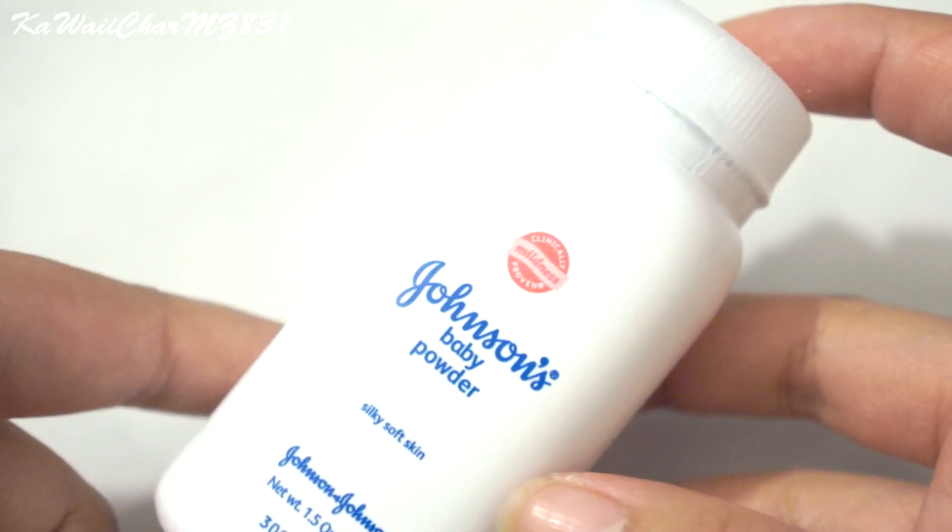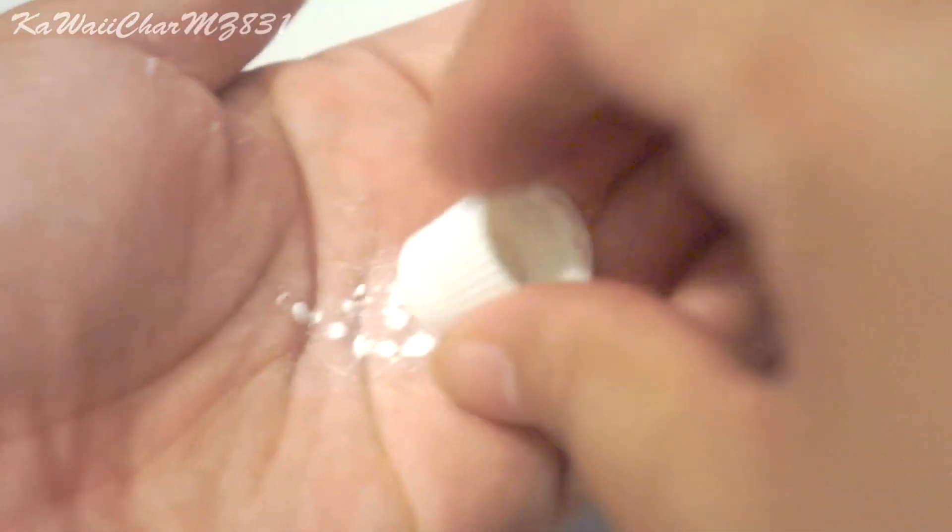Next, you're gonna take some Johnson's Baby Powder or just any kind of baby powder or cornstarch, and roll that ball of mold maker in your hand. Coat that with baby powder, and then you're gonna coat the toothpaste cap as well. Make sure that you pat down the polymer clay side as well.